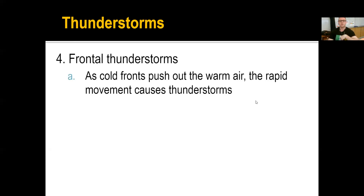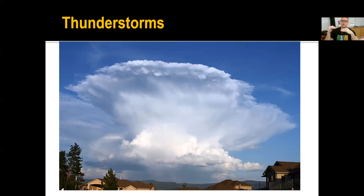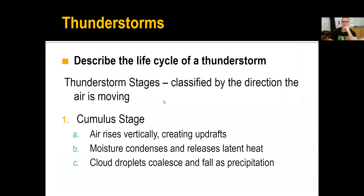The last type is frontal thunderstorms. Again, a cold front moves in and pushes the warm air up and out. This can create very rapid thunderstorm growth depending on how fast that cold front is moving in. It doesn't matter if it's daytime or not for frontal thunderstorms — unlike air mass thunderstorms, which rely on uneven heating of Earth's surface. Frontal thunderstorms can happen in daytime and last well into the nighttime as long as the cold front is moving that warm air, creating massive cumulonimbus clouds.